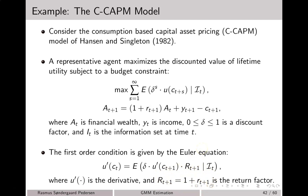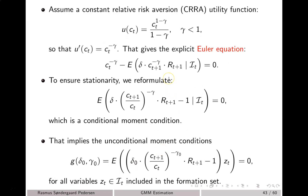What we want to do is estimate this discount factor and potentially also some parameters contained in the utility function. In order to do so, we need to put some additional structure on the utility function. We consider a utility function for so-called constant relative risk aversion, CRRA, given by this function here, where gamma is the coefficient of relative risk aversion.